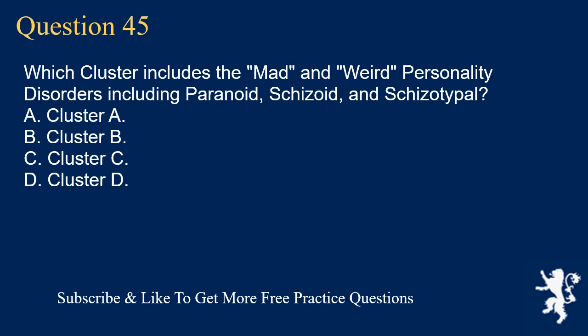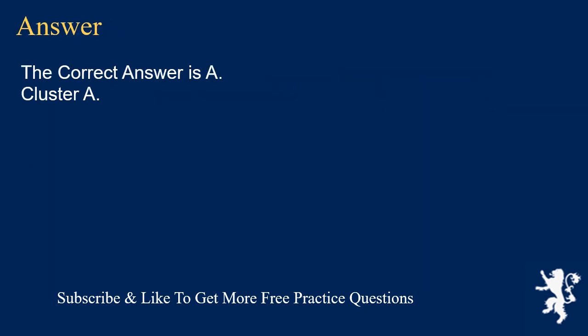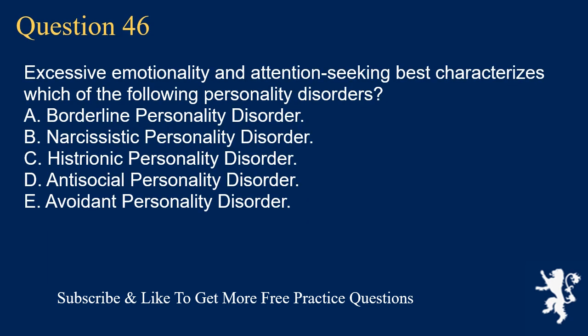Question 45. Which cluster includes the mad and weird personality disorders including paranoid, schizoid, and schizotypal? A. Cluster A. B. Cluster B. C. Cluster C. D. Cluster D. The correct answer is A. Cluster A.